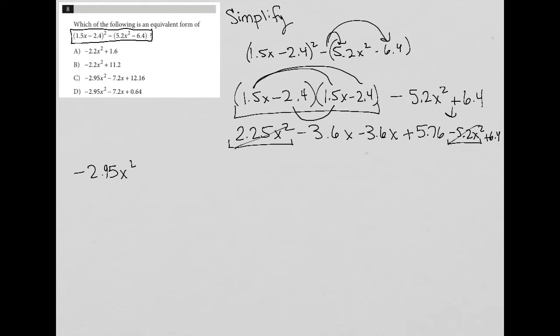So those are gone. And I have this negative 3.6x minus 3.6x. Well, that's minus 7.2x. So that's all gone.